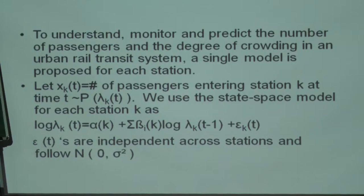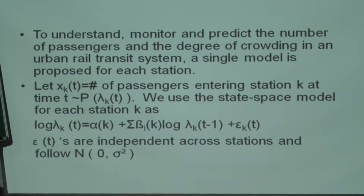Our task is to understand, monitor, and predict the number of passengers and the degree of crowding or congestion in an urban rail transit system - the entire system, not merely one station. This is multi-task in the sense that we are dealing with several stations. A single model is proposed for each station. If I combine all stations into one model, I lose the distinctiveness of each station belonging to residential, commercial, or manufacturing areas, so I maintain separate simple models.